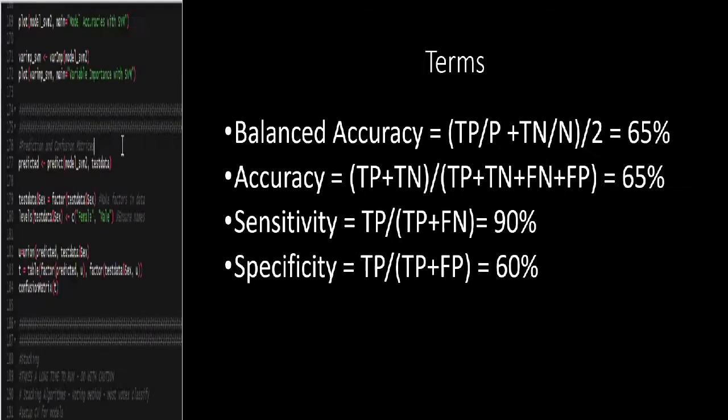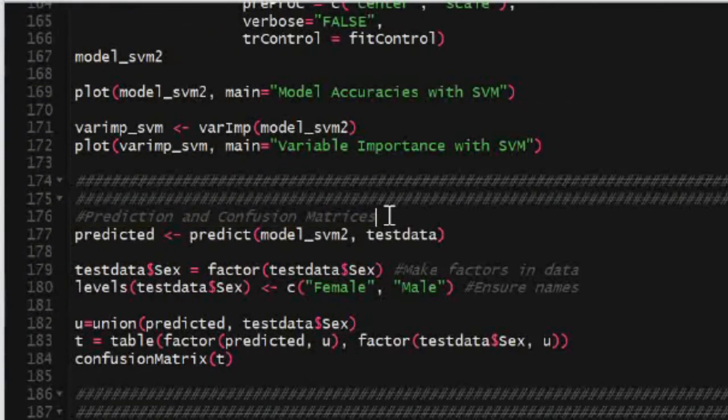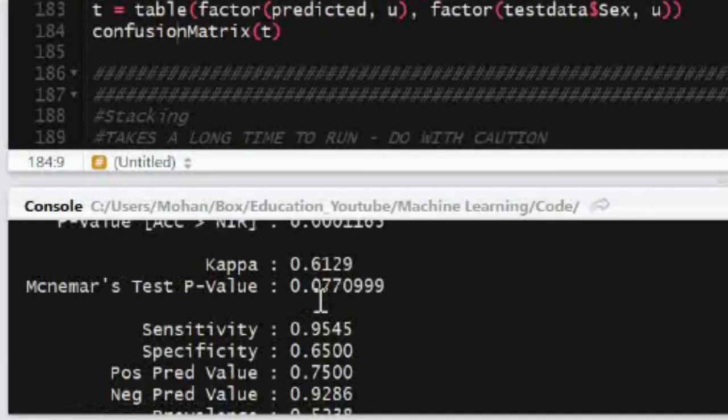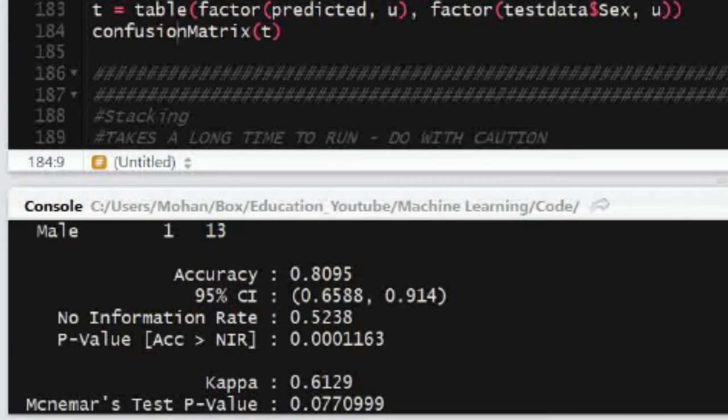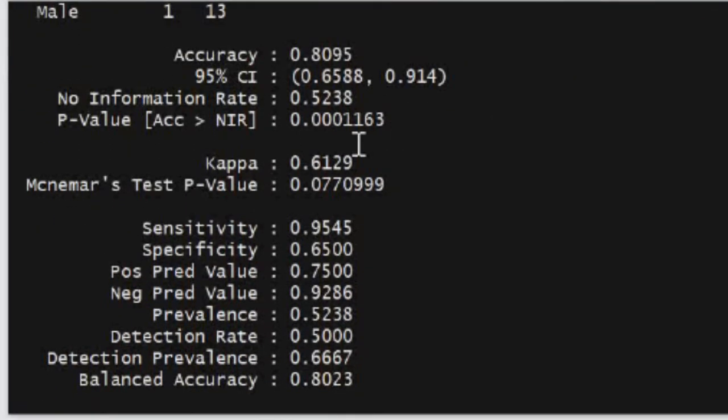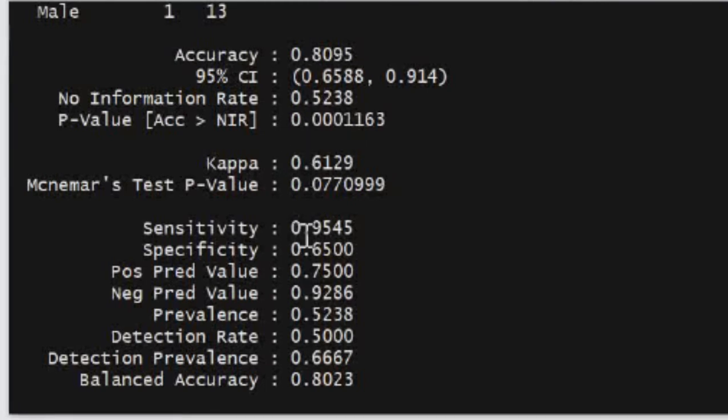So now we're going to use our model to predict the sex on our holdout data set based on the features that are going to be fed into it. I had to add in a few extra lines just to make sure that the confusion matrix is outputted correctly. We can see our model did pretty well. It got an 80% balanced accuracy, which is pretty good for just off the bat.